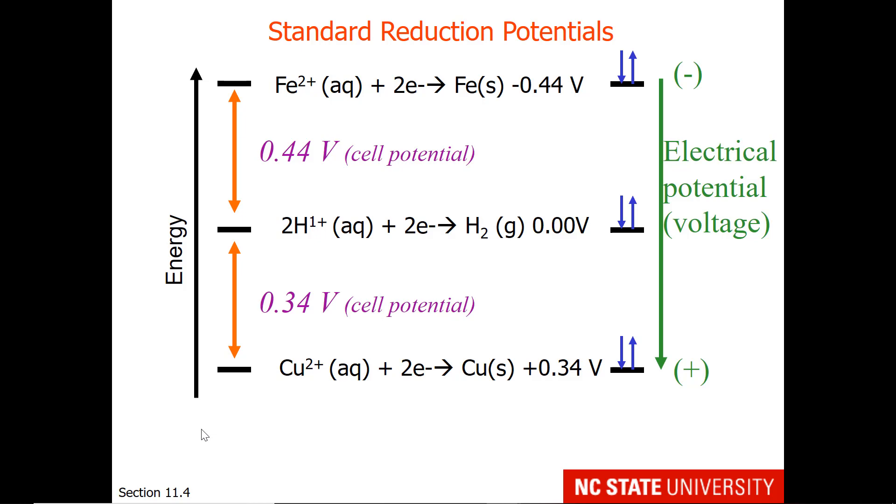Now where did those values come from? Our reduction potential for the cathode, if we look at this abbreviated chart, or any chart on the internet that you can find, typically the reduction potential for copper 2+ going to copper you will find is plus 0.34 volts. Again, if you search the internet or our textbook, you will find that the reduction potential of iron 2+ to iron is minus 0.44 volts. So when we take plus 0.34 minus a minus 0.44, the difference is 0.78 volts.